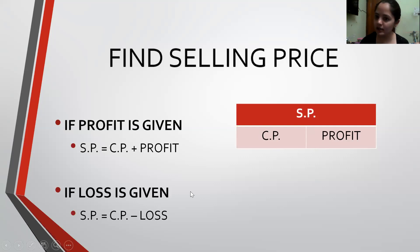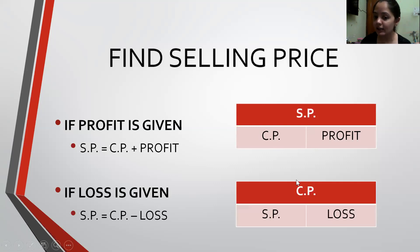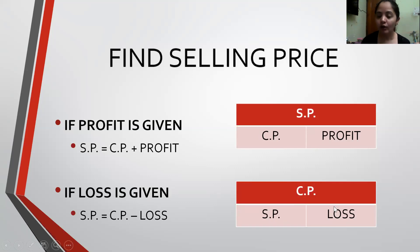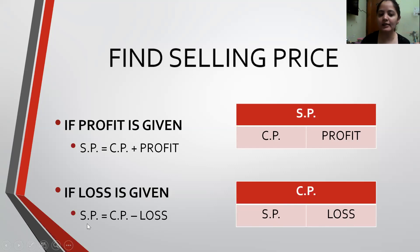If Loss is given and I have to find the Selling Price, it means Selling Price is less than the Cost Price. Cost Price is the bigger amount, and I have to find the smaller amount. So I subtract: Selling Price equals Cost Price minus Loss.